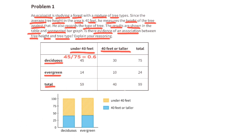45 out of the 75 deciduous trees are under 40 feet. That's equal to 60% of the deciduous trees. That means the remaining 40% of the deciduous trees must be 40 feet or taller.